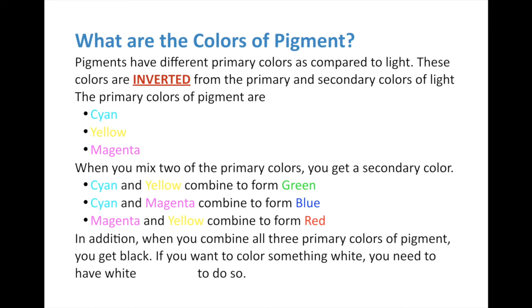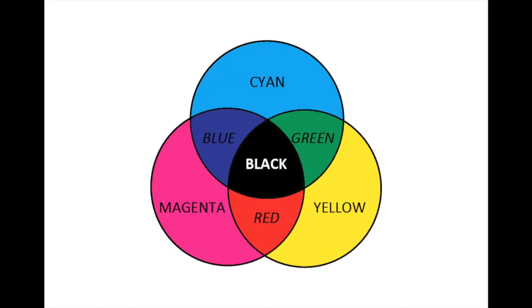Whenever you combine all three primary colors of pigment, you don't get white - you instead get black. If you want to color something white using pigment, you have to have white pigment to do so. That's why whenever you get paint and mix all the colors together, you get a black color. So this is our Venn diagram for pigment colors - go ahead and color and label that in.